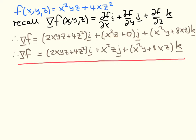Similarly, differentiating with respect to Y: there is a factor of Y and an X squared Z factor. When we differentiate the second term with respect to Y, we obtain 0 because there is no Y dependence, so we have X squared Z from the first term. Finally, in the Z direction, we differentiate with respect to Z: we're left with X squared Y, then plus 8XZ (bringing a factor of 2 down, 2 times 4 is 8, the power 2 reduced to 1). That's the answer to the second question.